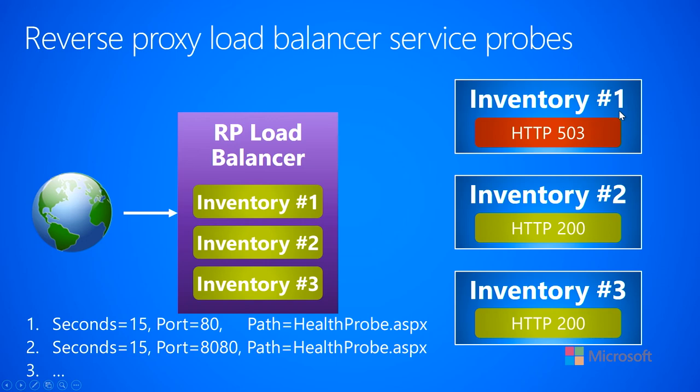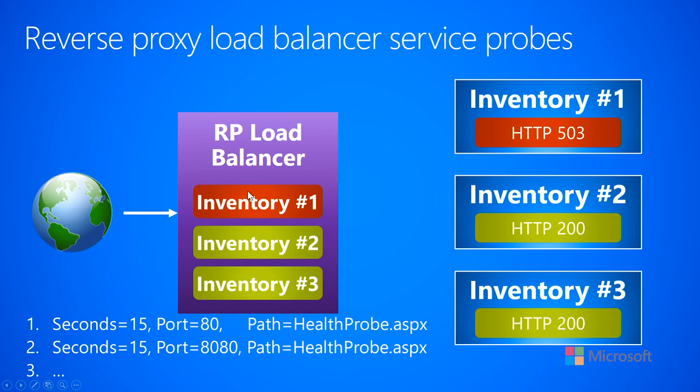Now let's say something has gone wrong with machine number one. The next time the load balancer probes all these machines, machine number one returns a 503. Because it's not returning 200 — really anything other than 200 indicates failure — the load balancer says machine number one has not returned a 200, so there's something wrong with it. Any future network requests that come in will not be sent to machine number one; they'll be sent to either machine two or machine three.